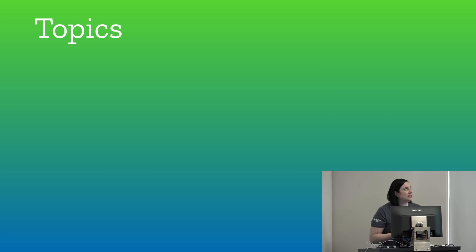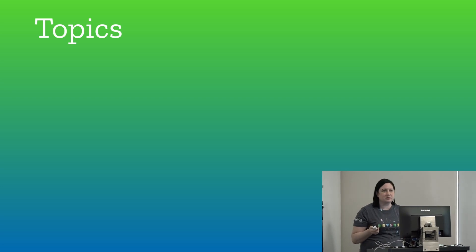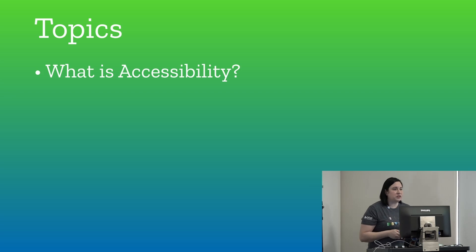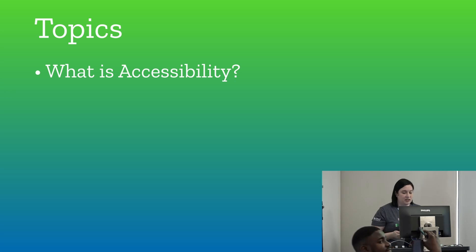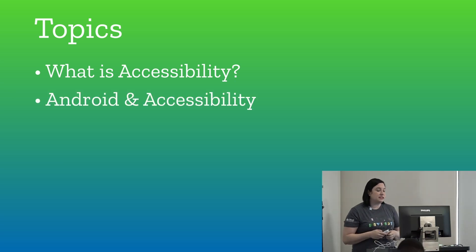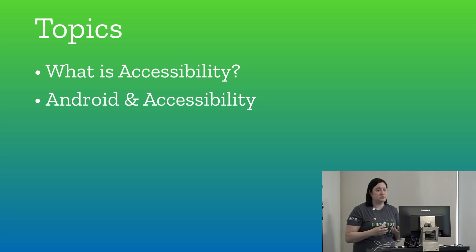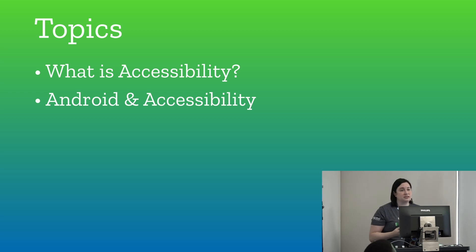Let's have a look at the topics I'll be covering today. First, what is accessibility and why is it really important? We're going to make a case that you can present to your product owner — to say it's really important to make the app accessible, and here's why. I'll explain the different kinds of disabilities, how they affect how disabled folks interact with your app, and the tools Android provides to assist them.